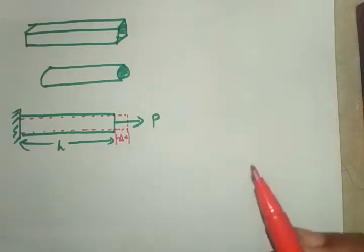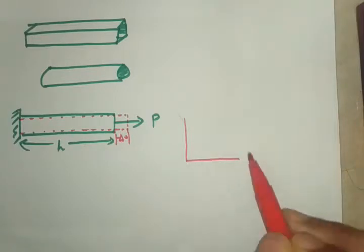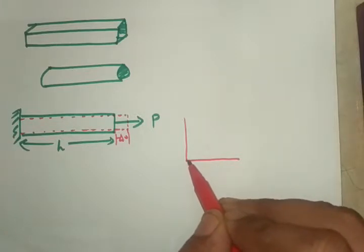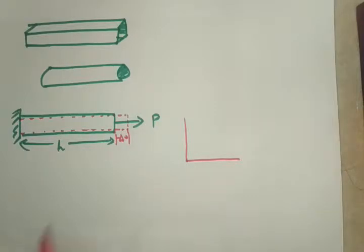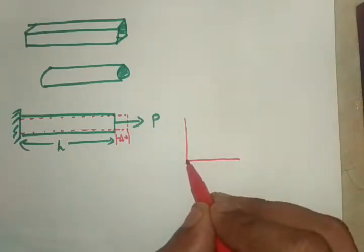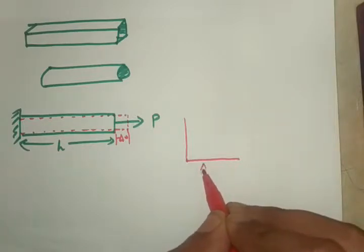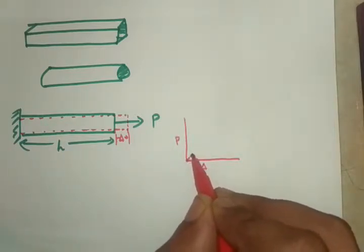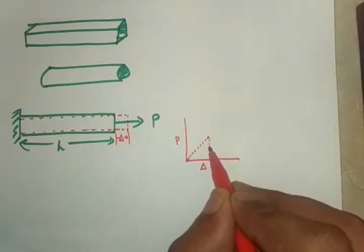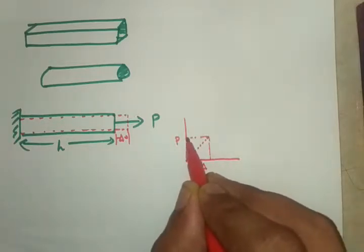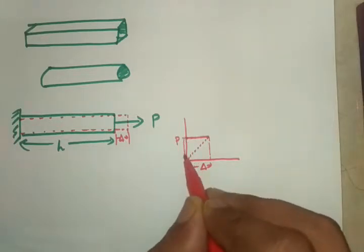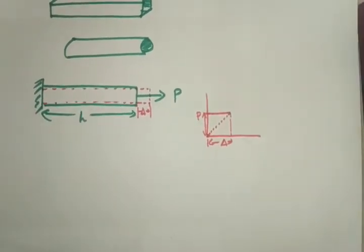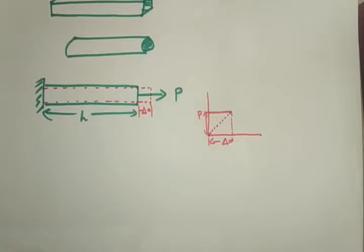How is delta achieved? First there is zero force, then the force is gradually increasing until it reaches the value P, and at that point the deformation reaches delta. So there is a gradual increase in the force P to achieve the elongation delta. We have to find out what that value delta is in terms of P.